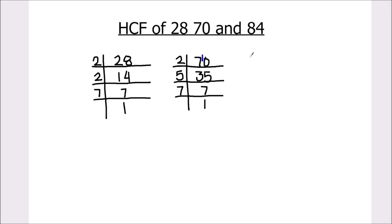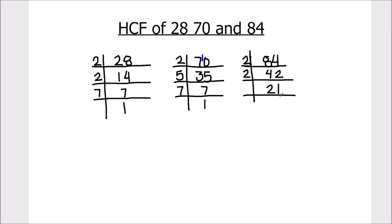Now let's find the factors of number 84. 84 is an even number, it is fully divisible by 2, giving 42. 42 is also divisible by 2, giving 21. 21 is an odd number and it is divisible by the next prime number 3. 3 times 7 is 21, and 7 is a prime number, only divisible by 7.